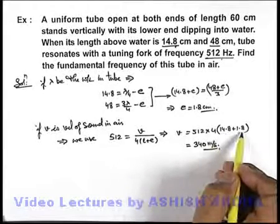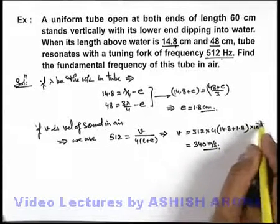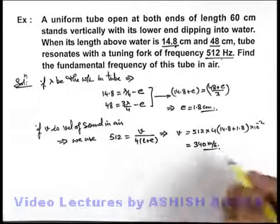Here, this is in centimeter, so we must multiply it with 10 to power minus 2 for getting the result in meters per second. If speed is 340 meters per second, we can easily find the fundamental frequency.